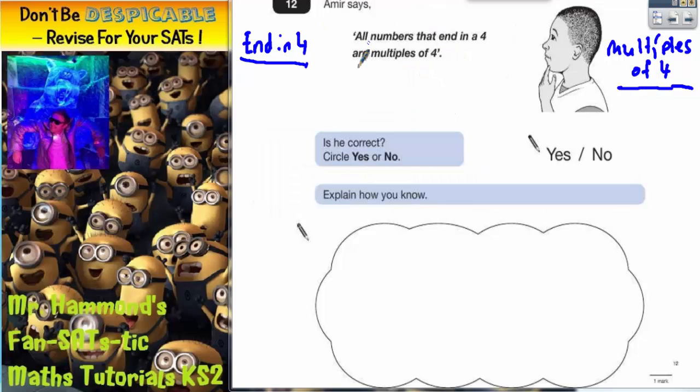Question 12: Amir says all numbers that end in a 4 are multiples of 4. Is he correct? Circle yes or no. Explain how you know.